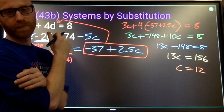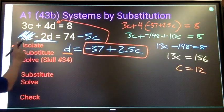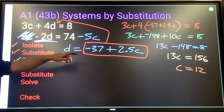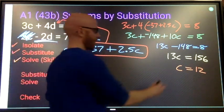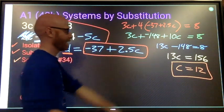C equals 12. So we isolated, we substituted, we solved for c. Now we're going to work on getting a value for d. We're going to take this.